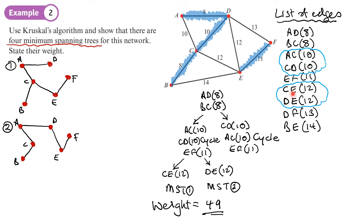Then we've got these two choices of the different 12s, haven't we? CE, which is fine, or DE, which is also fine. And we've now got two choices here. So we can pick the CE and get a minimum spanning tree here like this. This would be minimum spanning tree number three. Or we could pick the DE here like this and get our minimum spanning tree number four.